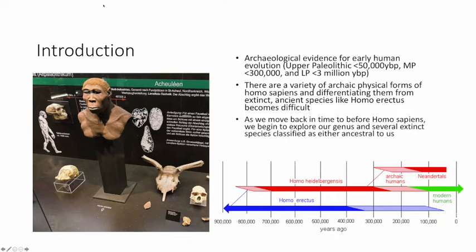In that discussion, we talked about the fact that when we're looking at this archaeology, there is a variety of archaic physical forms of Homo sapiens, and that differentiating them from extinct ancient species like Homo erectus becomes difficult for anthropologists. As we move back in time to before we find any evidence of Homo sapiens, we really begin to explore our genus and several extinct species classified as ancestral to us, visible on the timeline with modern and archaic humans, and then other species within the genus Homo.